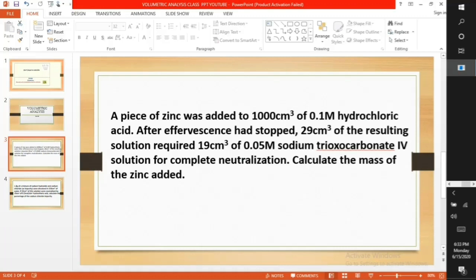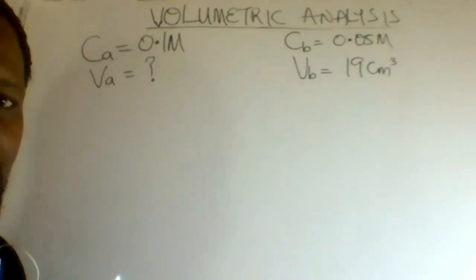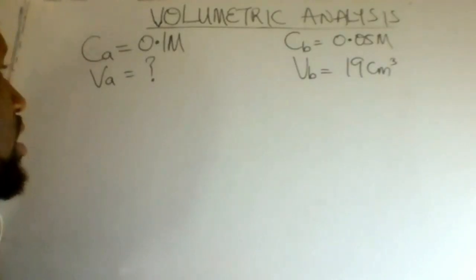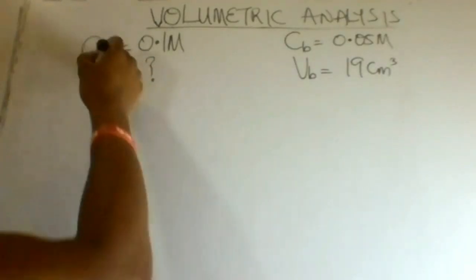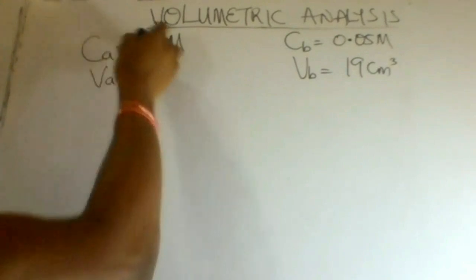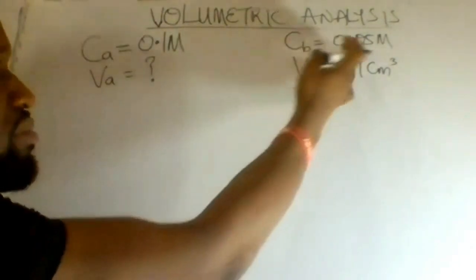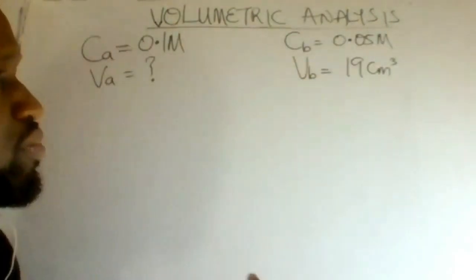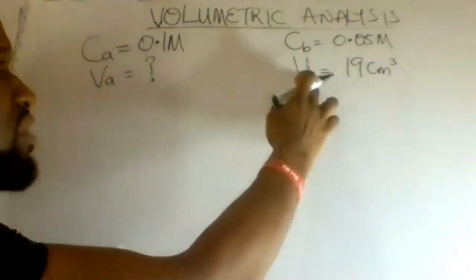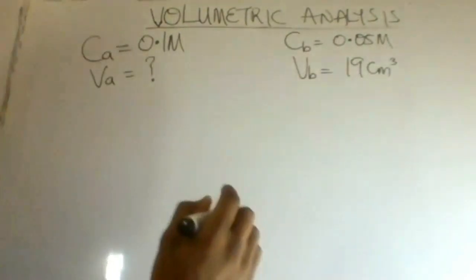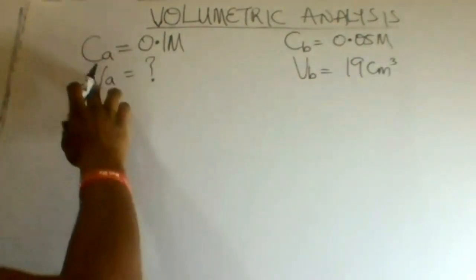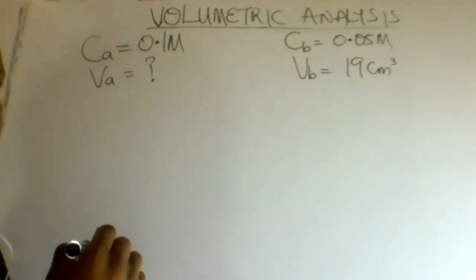Pause this video to write the question down. The values given in the question are: concentration of the acid, 0.1 molar; concentration of the base, 0.05 molar; volume of the base, 19 cm³. The volume of the acid is unknown.